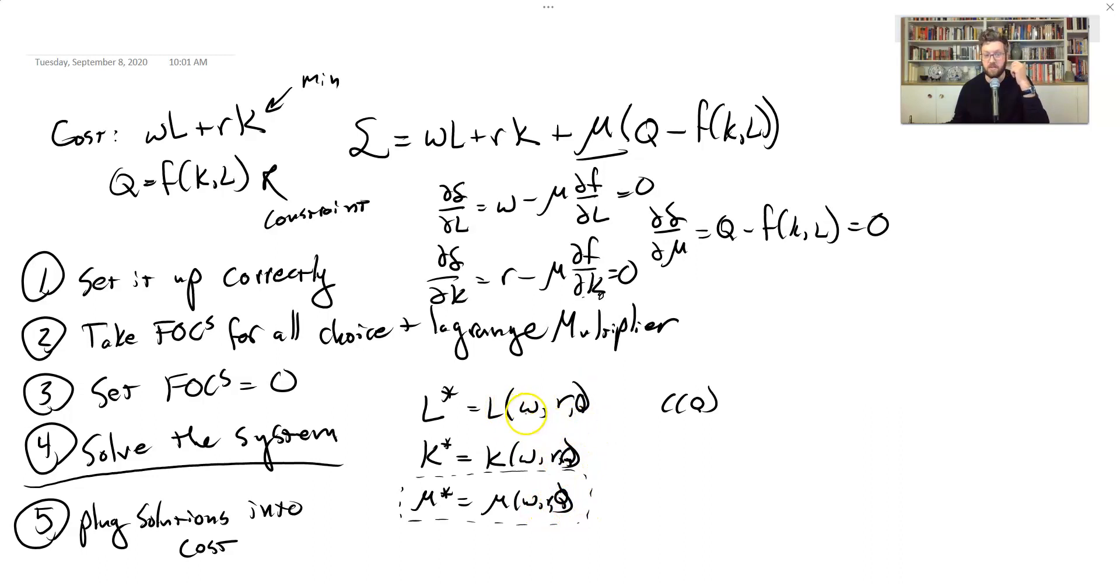Q is another exogenous variable in this problem because it's something you don't choose. We're being told you need to find the cheapest way to produce say 10. So those are little Q's that I've added in at the end here. So the cost function is going to be W times labor. But now we know exactly how much labor we should hire if we want the minimum cost. And it's given by this equation.